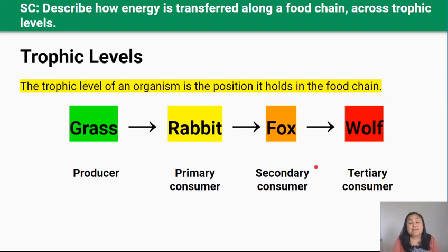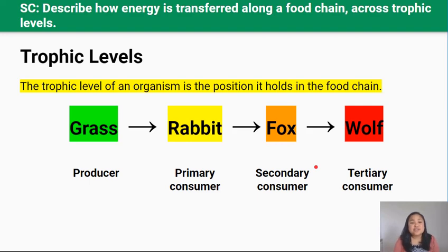We need to learn about trophic levels before we can understand food chains, because the trophic level of an organism describes where on the food chain that organism is — in other words, how high up on the food chain. Let's look at this food chain: rabbit eats grass, fox eats rabbit, and wolf eats fox.